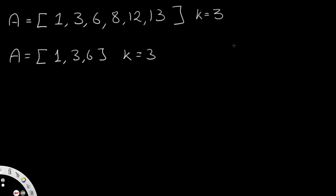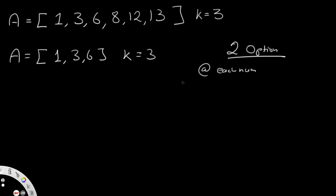At each number in the array, we have two options. Our k value is equal to 3, so at each element we have option 1: adding the k value, which is plus 3, and option 2: subtracting the k value, which is negative 3.